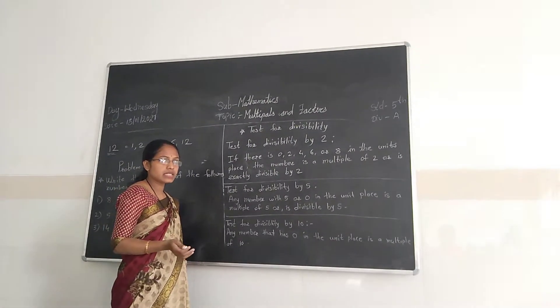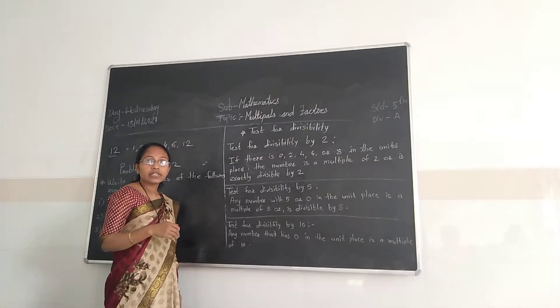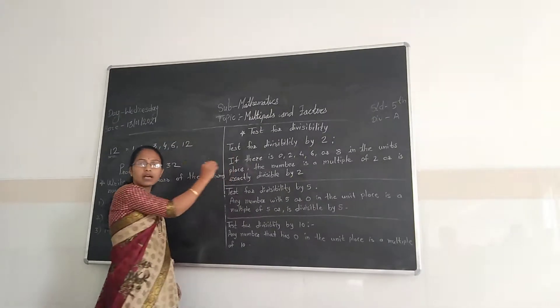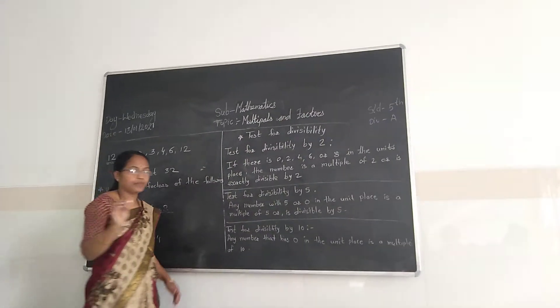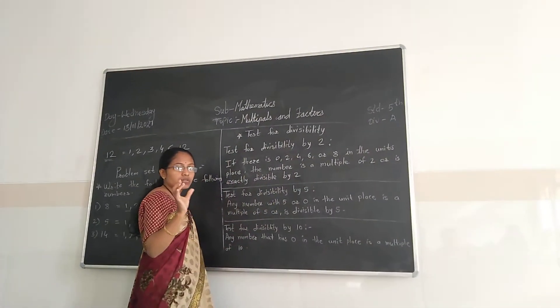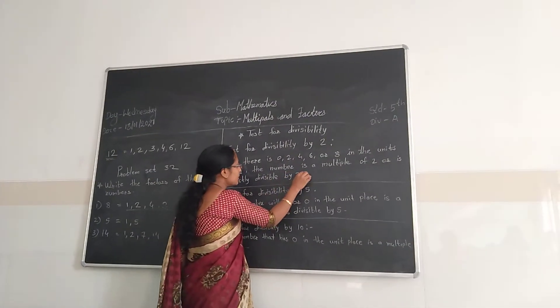See, if a big number is there and we have to find out if it is divisible by 2 or not, then we can use the test for divisibility. So for 2, we have to consider the unit place.